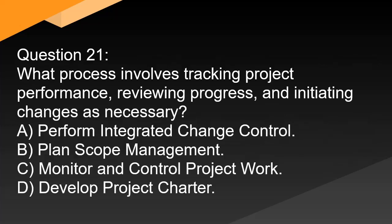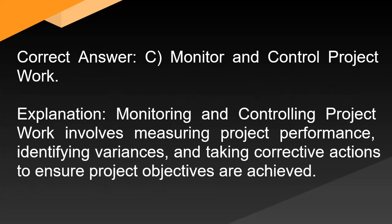Question 21: What process involves tracking project performance, reviewing progress, and initiating changes as necessary? A. Perform integrated change control. B. Plan scope management. C. Monitor and control project work. D. Develop project charter. Correct answer: C. Monitor and control project work. Explanation: Monitoring and controlling project work involves measuring project performance, identifying variances, and taking corrective actions to ensure project objectives are achieved.